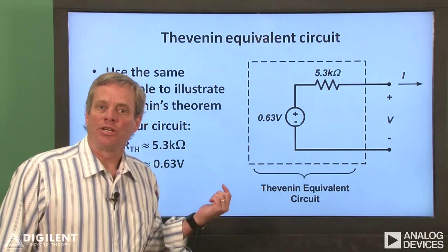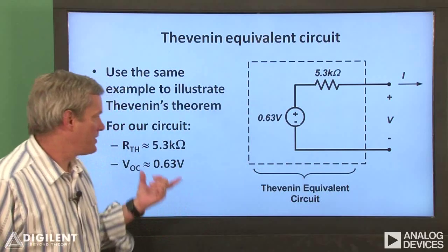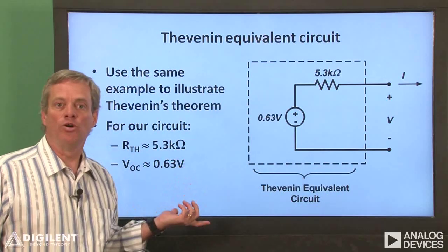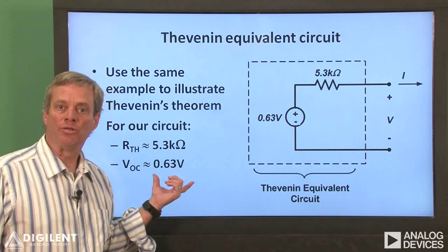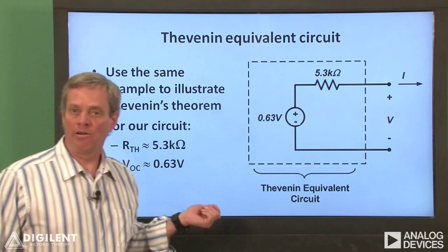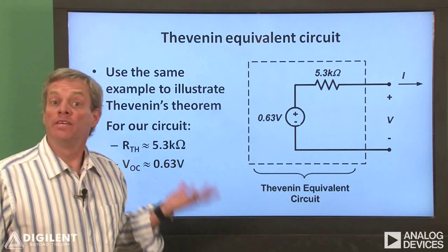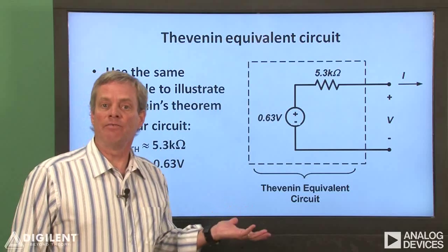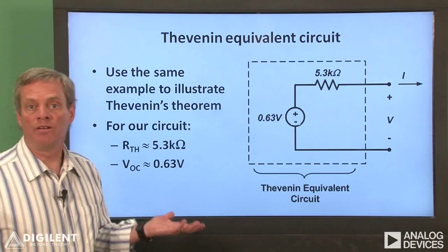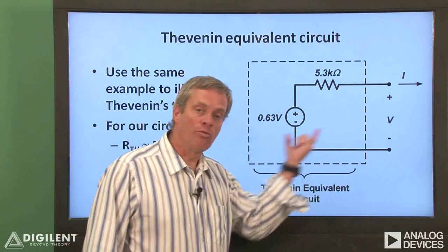Analysis of our original circuit results in the Thevenin equivalent circuit shown here. The Thevenin resistance is 5.3 kilohms, and the open circuit voltage is 0.63 volts. These parameters match the slope and y-intercept of the voltage-current characteristics of the original circuit that we measured previously. This is good news, since the Thevenin equivalent circuit is nothing more than a physical representation of the voltage-current relationship for the original circuit.